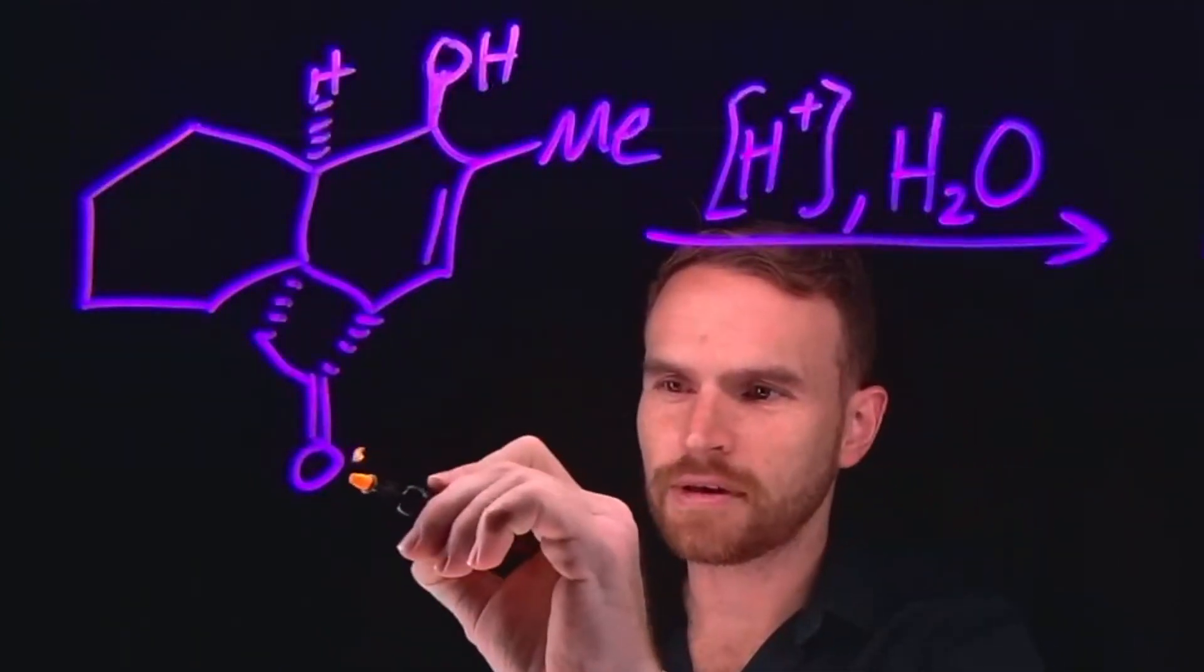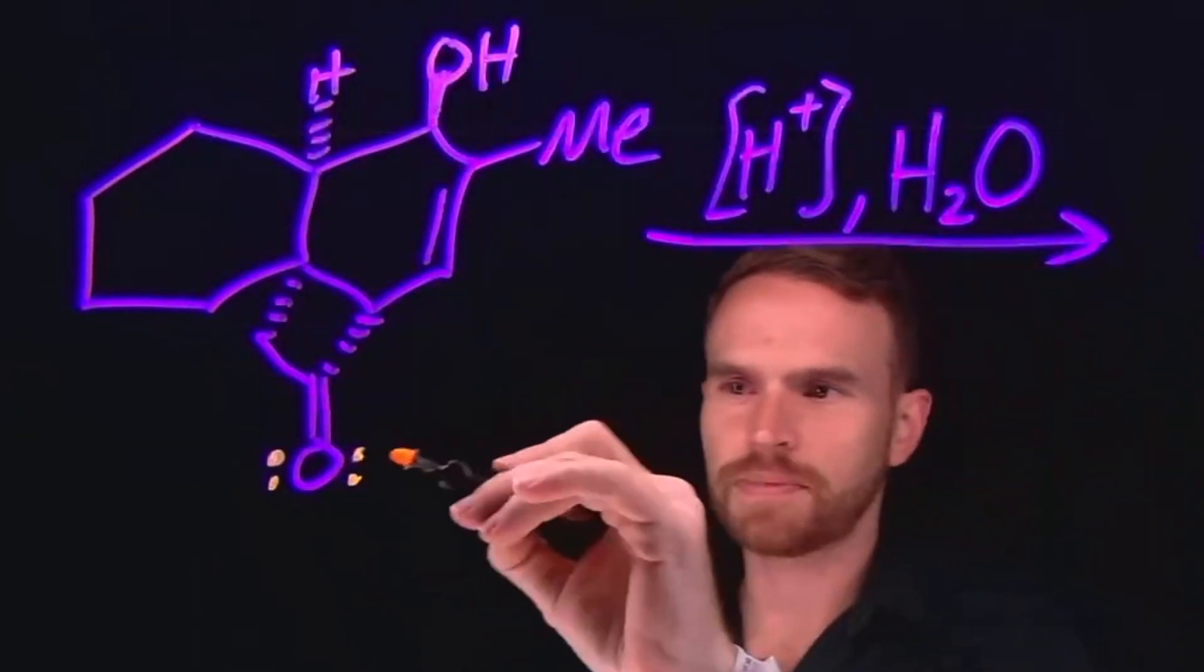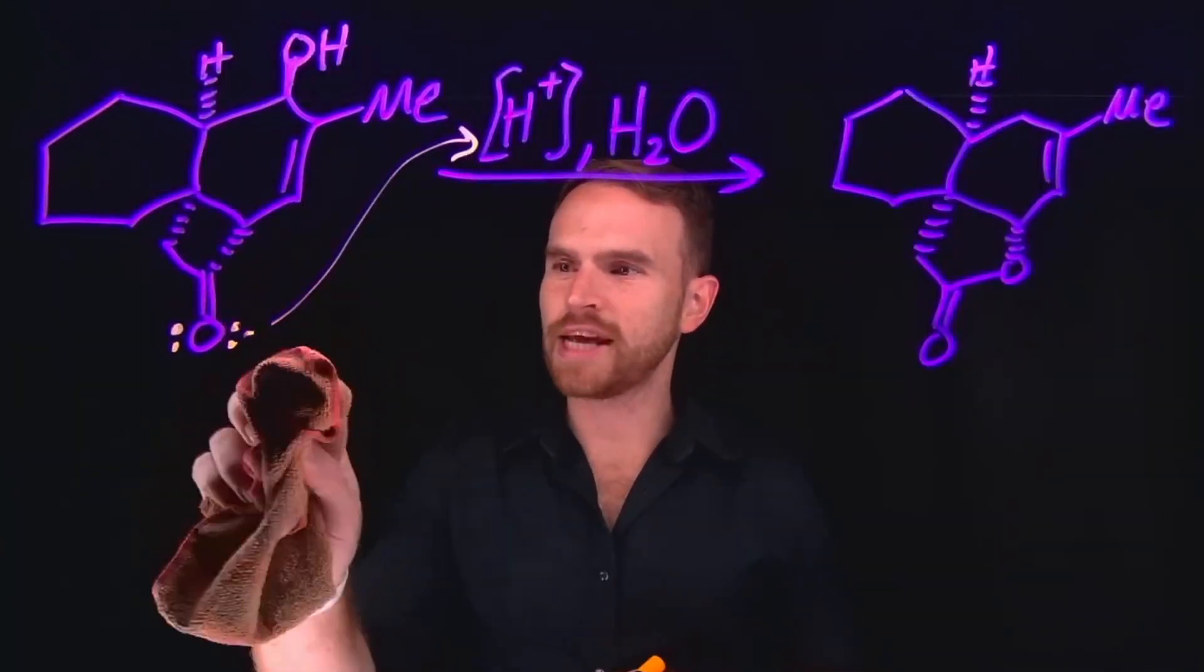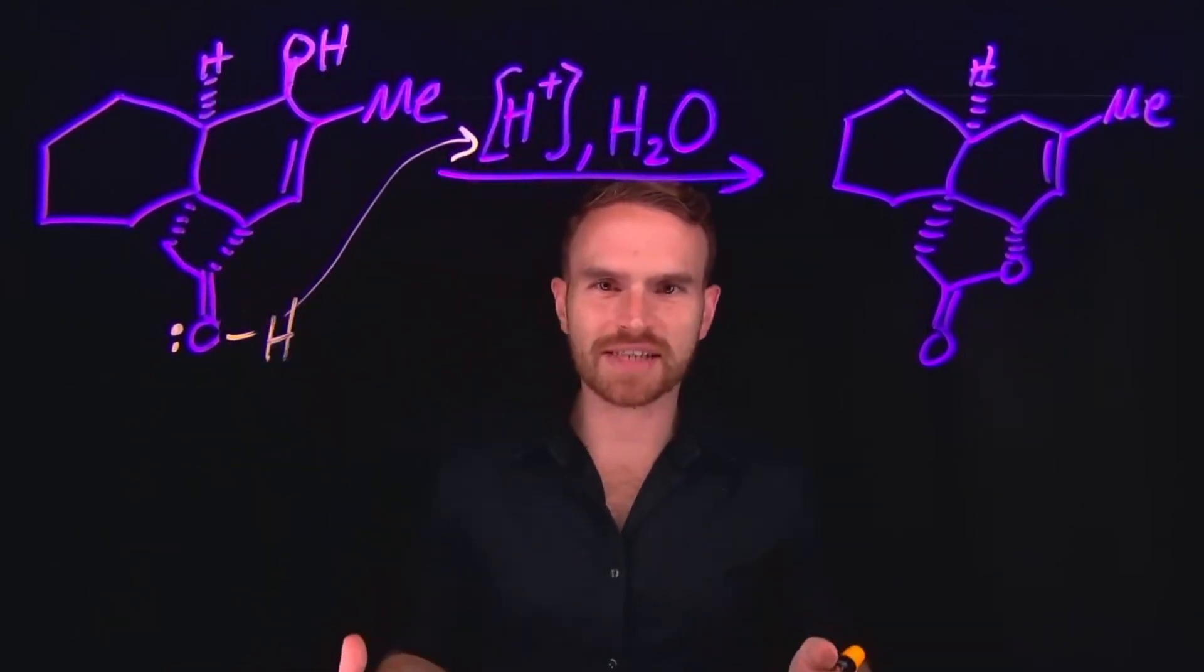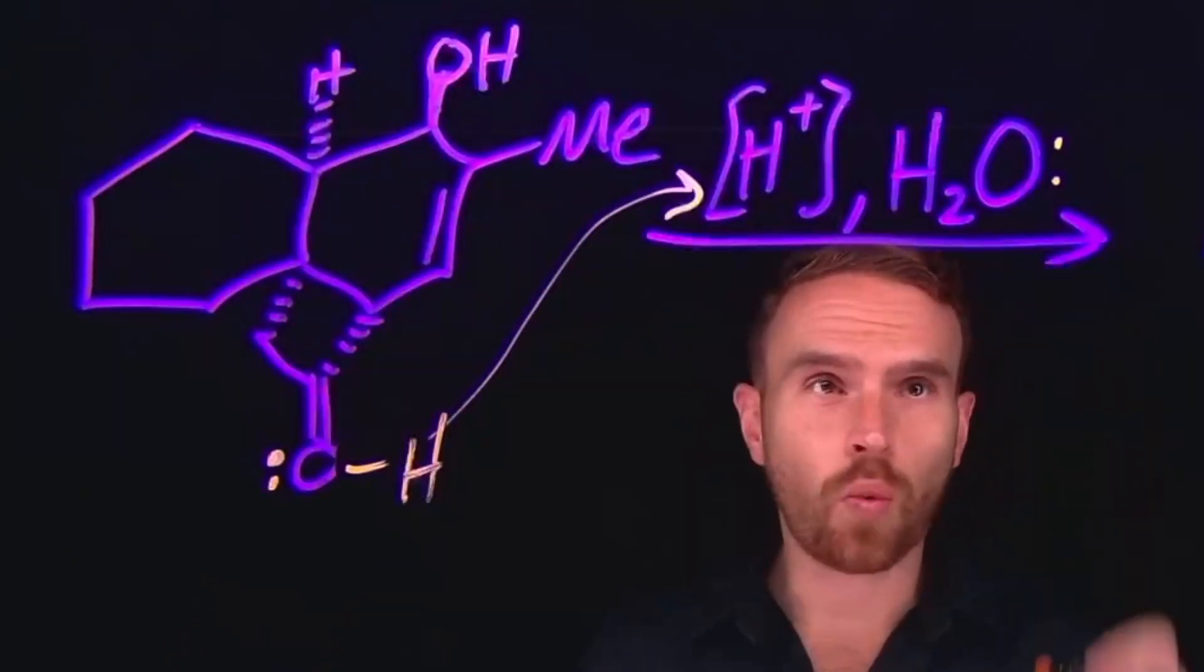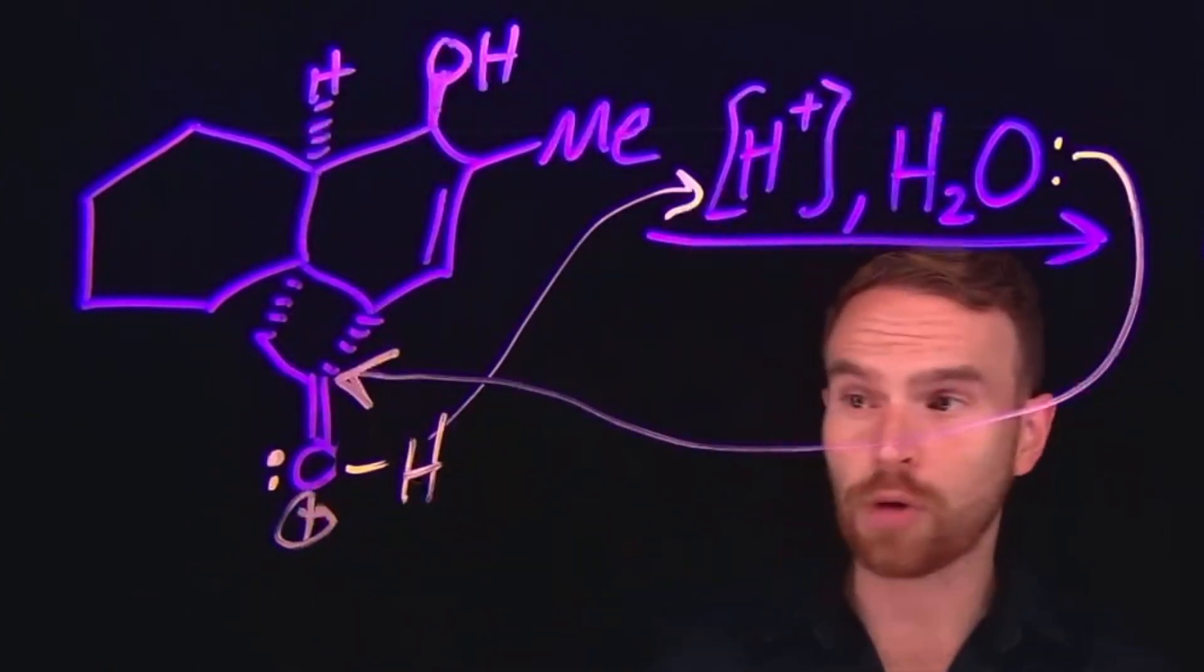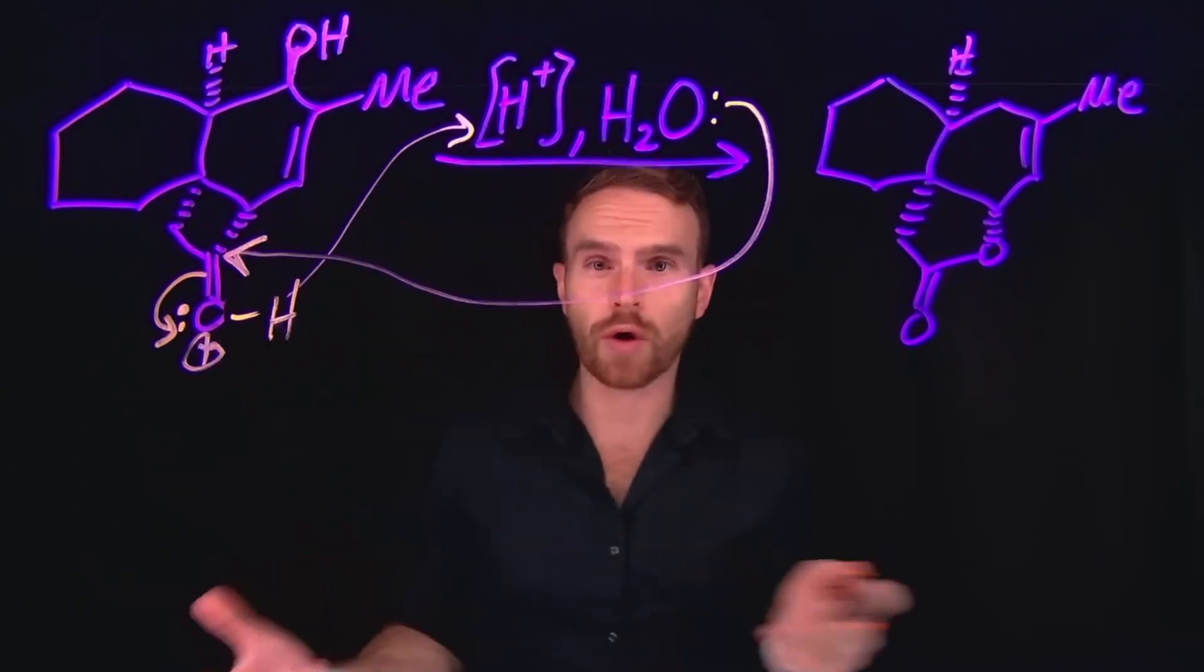The first step, which is very often the case anytime you have a carbonyl group and some acid, is going to be protonation at this position, which is going to severely and incredibly activate this functional group. In fact, following protonation at this position, that is going to make the carbonyl carbon incredibly susceptible to nucleophilic attack from even weak nucleophiles like water. So water can therefore come in and attack this carbonyl carbon because it is so incredibly activated following protonation of this carbonyl oxygen. And once that happens, that's going to kick up these electrons to make this a neutral alcohol.